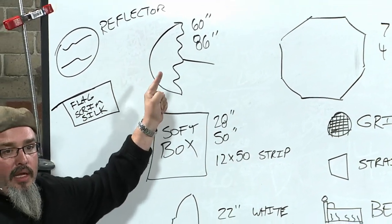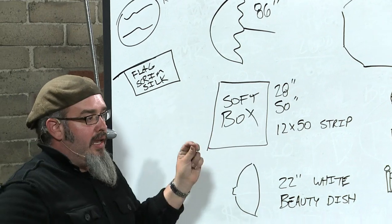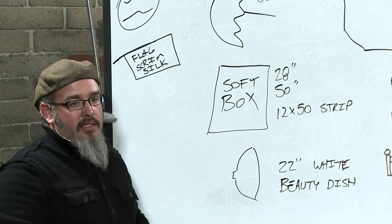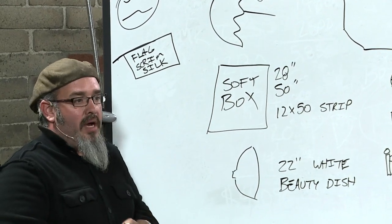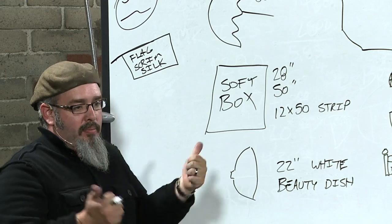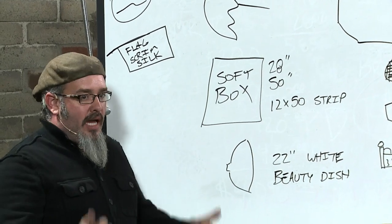The 60 inch convertible umbrella at B&H, made by Impact, their house brand, is 30 bucks. That is my number one best modifier.